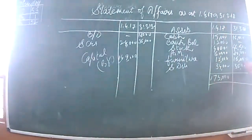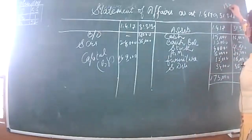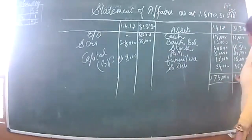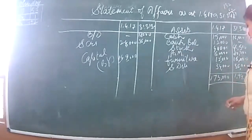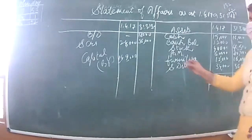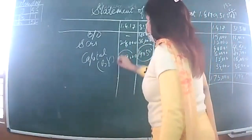Now let's calculate closing capital. Adding closing figures: 36 and 16 gives 52, then adding further gives 1,94,500 on the asset side. After deducting liabilities of 54,000, our closing capital is 1,40,500. So closing capital is 1,40,500 and opening capital is 1,49,000.